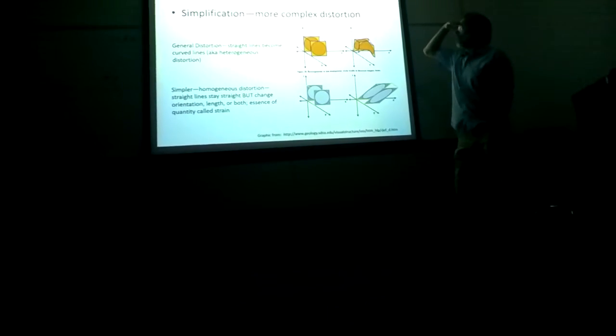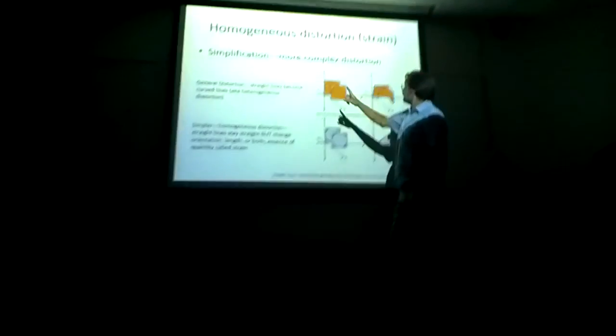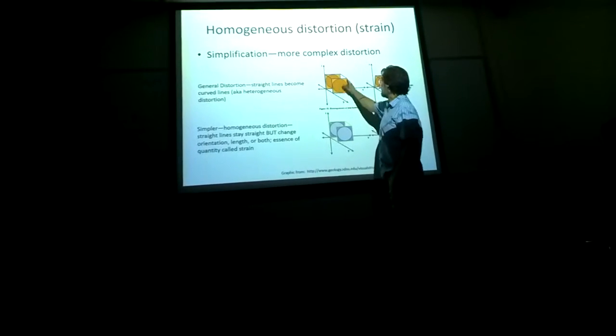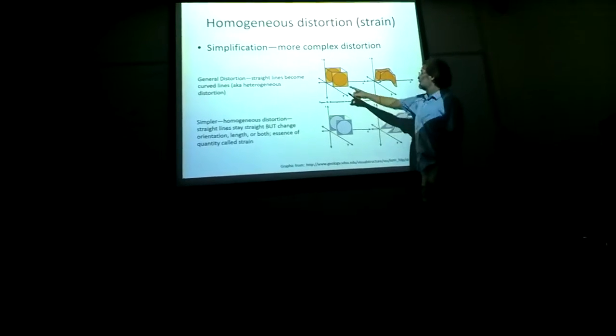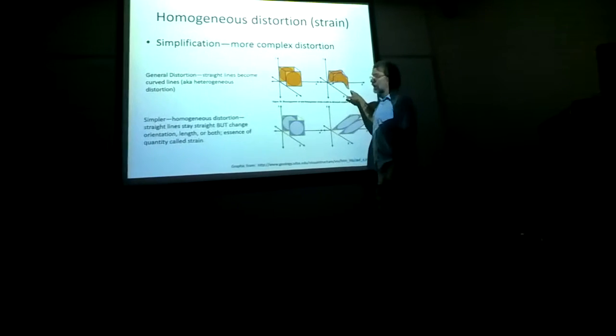Distortion. In homogeneous distortion, you start with straight lines and make straight lines. But in a general case, if you start with straight lines, you can make curved lines.